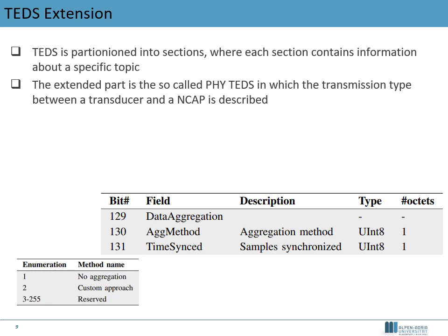The extension consists of field 129, which groups the extension as data aggregation. Only two self-explanatory fields are defined: field 130, in which the used aggregation method can be defined as an enumeration chosen from a table; and field 131, which declares whether time cell information can still be extracted from the samples on the NCAP side after data aggregation. The enumeration table provides space for a wide range of aggregation methods to be defined in future revisions of the TED standard. At the moment, only two methods are defined: one for when no aggregation method is used, and the custom approach proposed in this work.